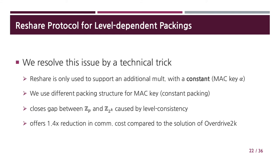In this context, Overdrive2K provides two masking ciphertexts with the same message but in different packing levels. This solution, however, almost doubles the cost of the reshare protocol. On the other hand, we resolve this issue by a technical trick. The main observation is that we use the reshare protocol only to support an additional multiplication with MAC key alpha, which is indeed a constant in Z2K. Thus, we do not even need to care about packing levels if we use a different packing structure for the MAC key, namely the constant packing method. Our trick offers 1.4 times reduction in communication cost compared to the solution of Overdrive2K.